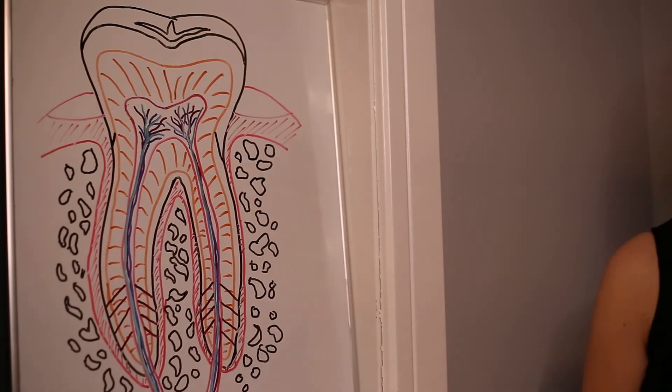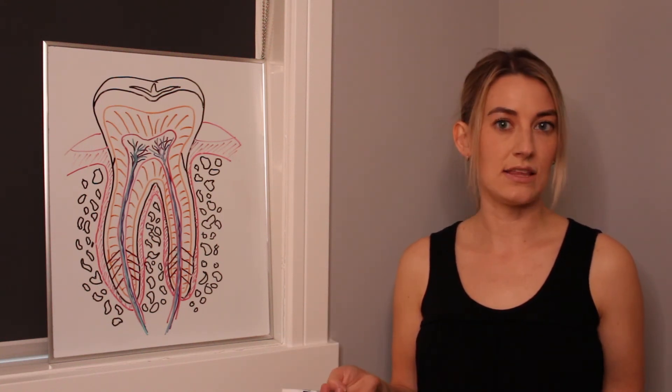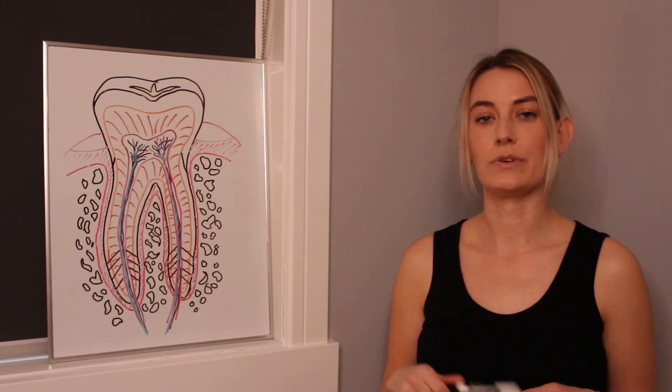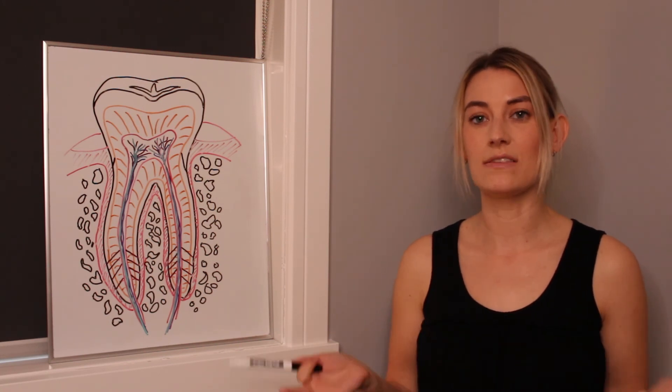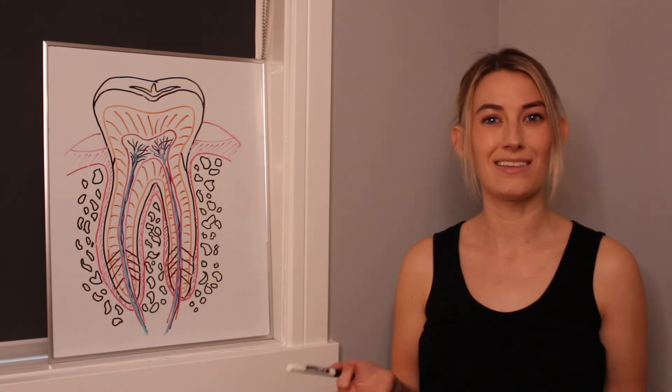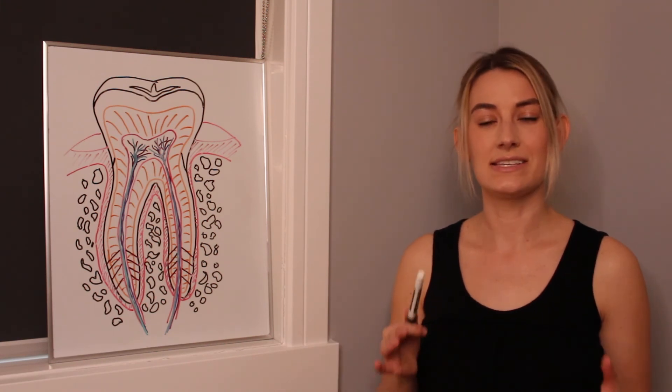Basically what this is, is it's the bone that the teeth are anchored into. Now a lot of the times people think that your teeth sit in the gums, not true. Your teeth actually sit in the bone and then the gum tissue lies on top of them, kind of like carpet lies on top of hardwood. It's the same kind of principle.